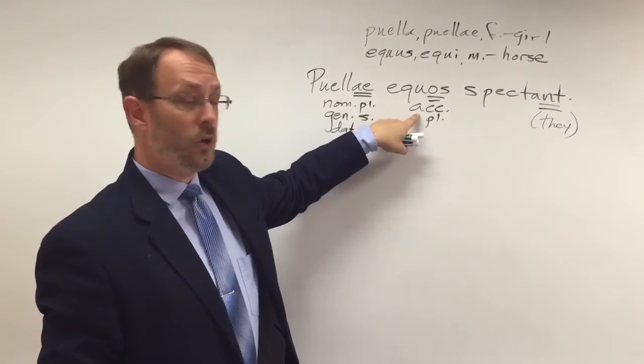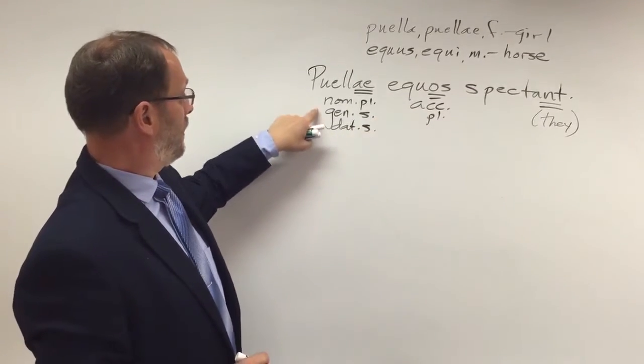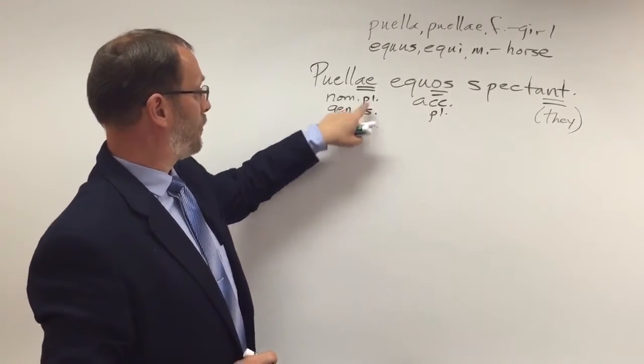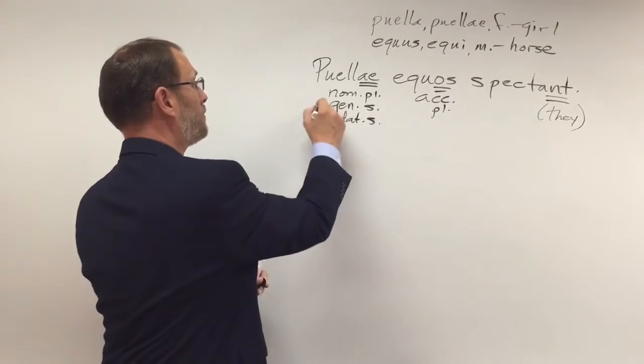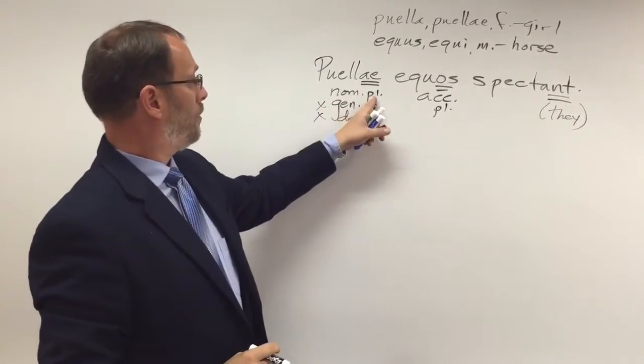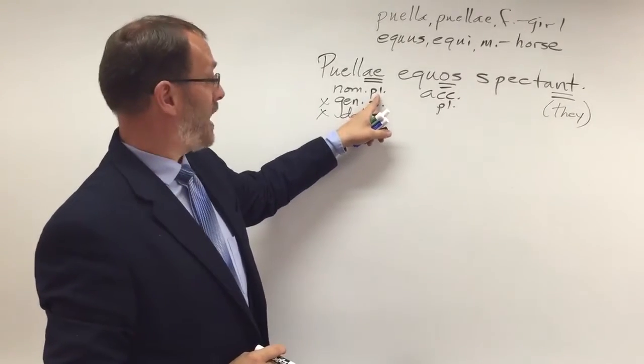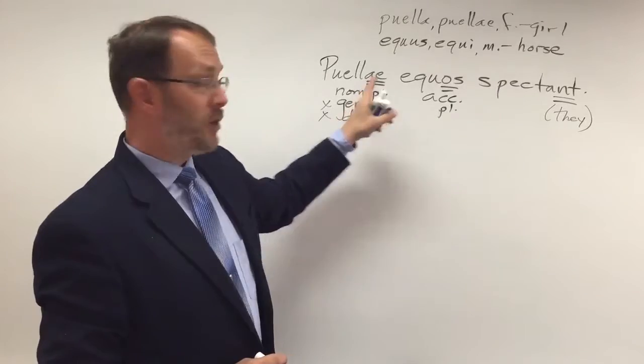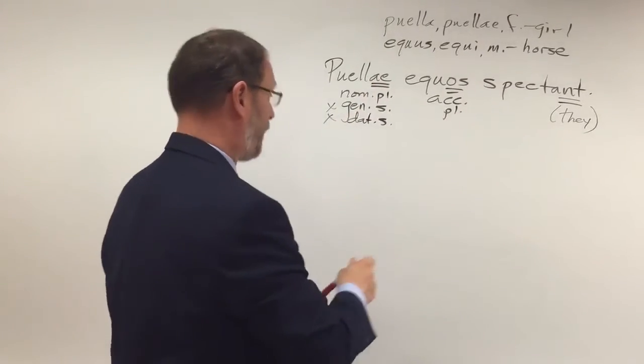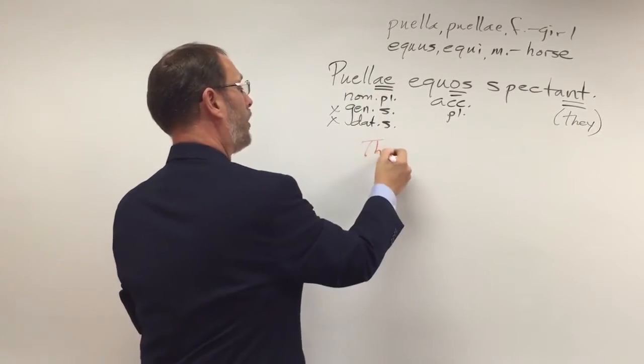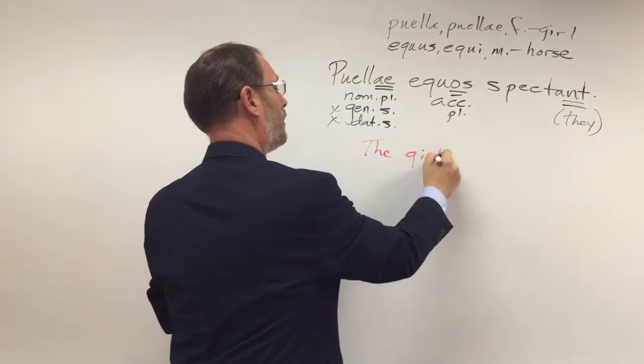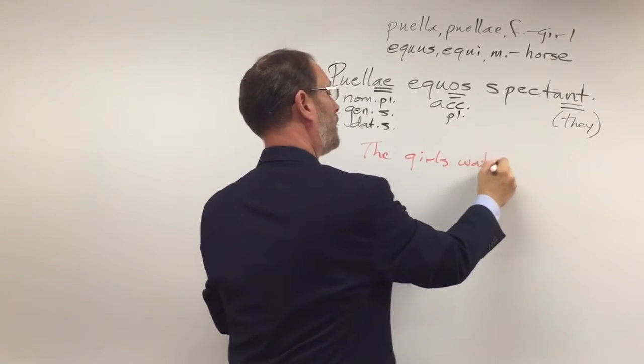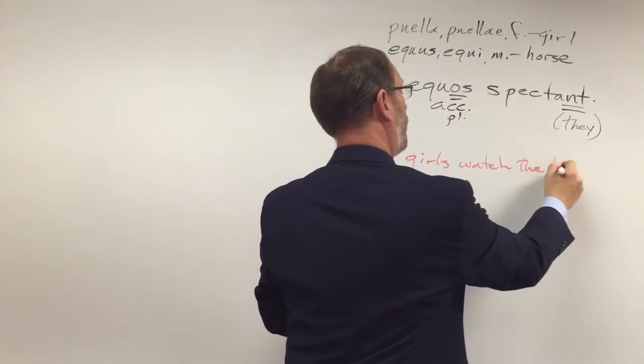Now, genitive and dative here, those are both singular forms, so I know those can't be right. But sure enough, puellae can be plural and nominative, which makes it the subject. So if I look at this sentence, I've got the girls watch the horses.